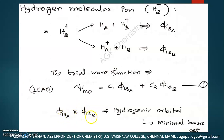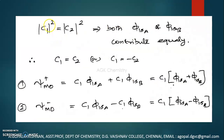Here φ₁ₛ_A and φ₁ₛ_B — right now I have chosen these orbitals as hydrogenic orbitals, also called Slater type orbitals. We call this a minimal basis set. Since both these atomic orbital functions contribute equally, we can say that the squares of the coefficients C₁² and C₂² must be equal. If these two are equal, then there are two possibilities: one is C₁ = +C₂, the other is C₁ = −C₂.